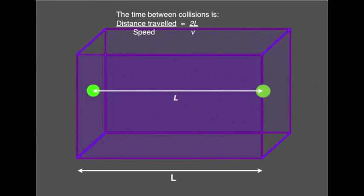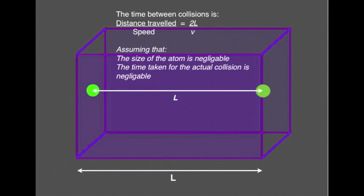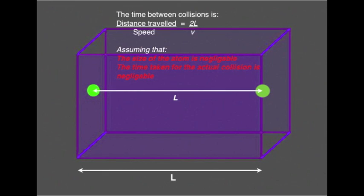Here again we are making an assumption. The distance that the atom or molecule will actually be travelling is slightly less than the full length of the box, due to its own size. So we are making the assumption that the diameter or size of the atom or molecule is insignificant. Neither are we making any allowance for the time of the collision. We are assuming that that time is absolutely negligible. It is important for most examination boards that you make a note of these assumptions we are making.